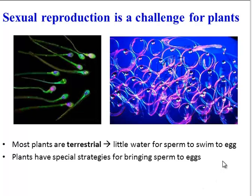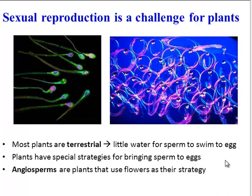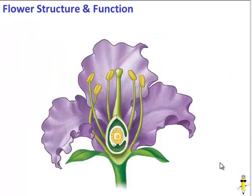Different types of plants have different strategies, but the strategy we're going to focus on in this video is the strategy that angiosperms use. Angiosperms are types of plants that use flowers to reproduce. So let's take a look at the structure and function of a flower.